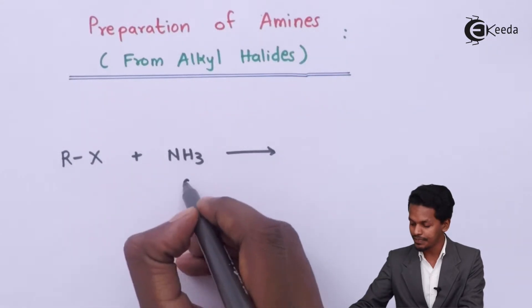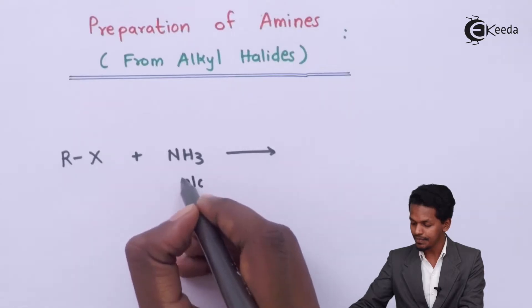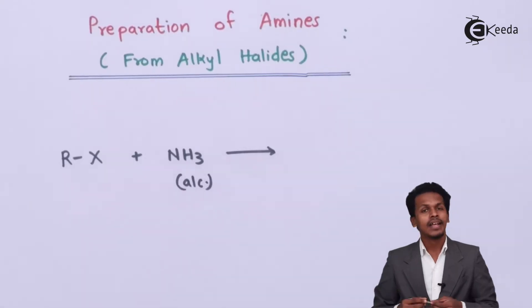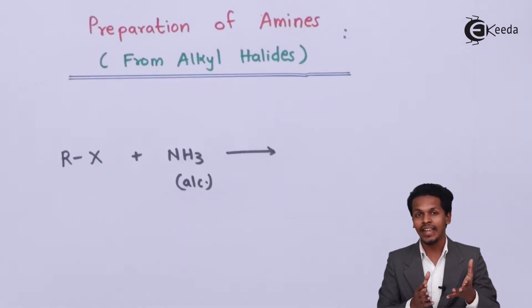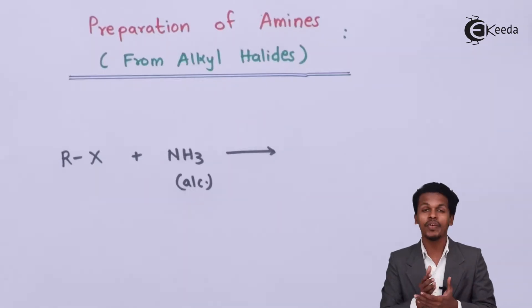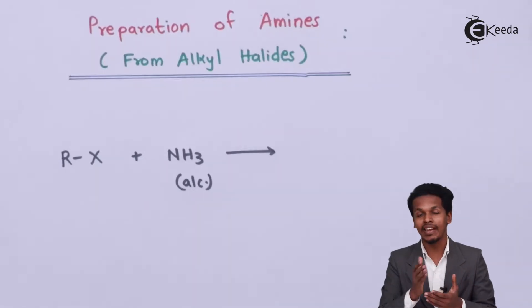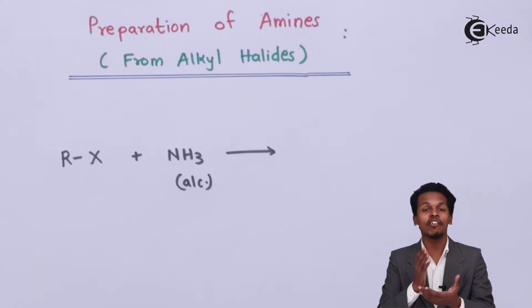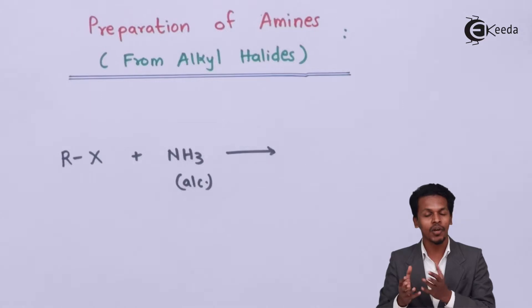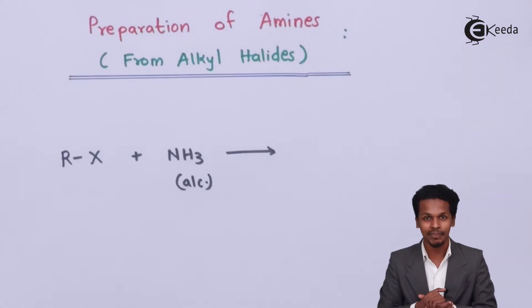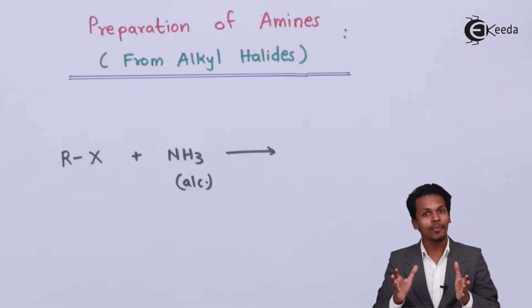And that ammonia is also alcoholic. The alcoholic ammonia will react with the alkyl halide and it will break the bond between the carbon and the halogen atom. That kind of breaking of the bond between carbon and halogen with the help of ammonia is basically known as ammonolysis, and that is what I am going to talk about.